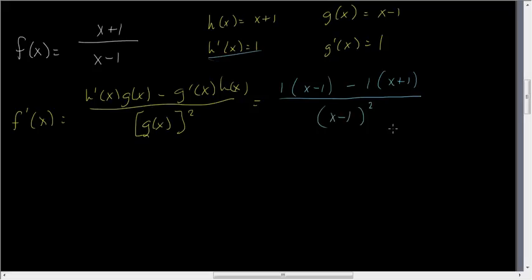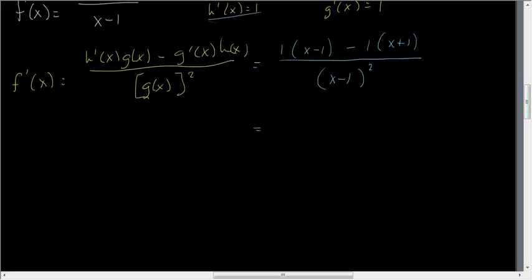Again, don't expand out the bottom yet. Let's see what happens. So, let's fix up the top here. We have x minus 1, minus x minus 1, all over x minus 1, quantity squared. x minus x, let me grab a different color here. x minus x is 0. This equals negative 2. So, we have negative 1, and negative 1 is a negative 2, all over x minus 1, quantity squared.